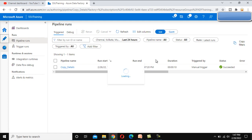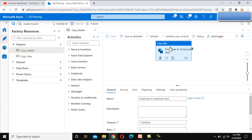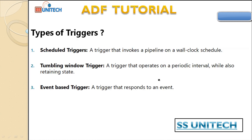We have multiple options when adding triggers. Let's look at the types of triggers. There are three types available in Azure Data Factory: first is the scheduled trigger, second is the tumbling window trigger, and third is the event-based trigger.